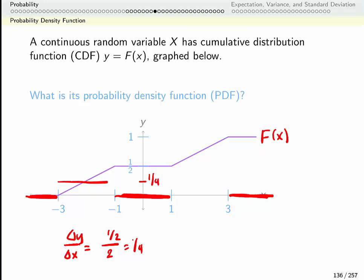So my function is at a quarter here and we have the same slope here. If I wanted to graph my probability density function that's what it would look like.